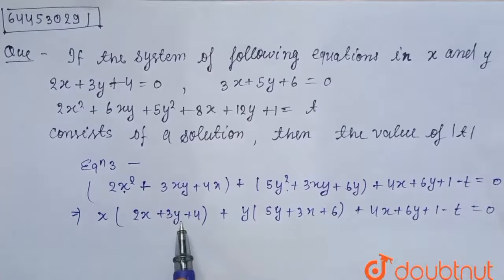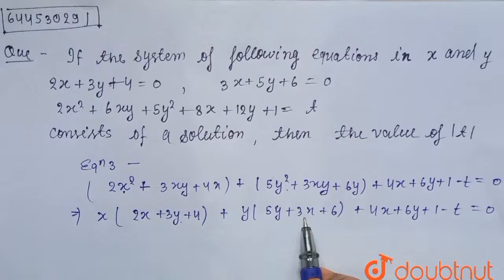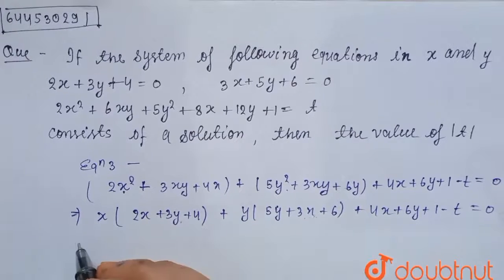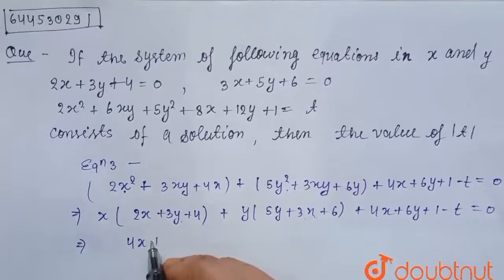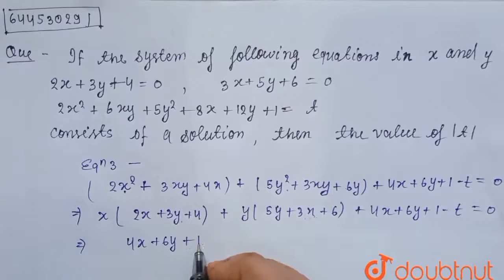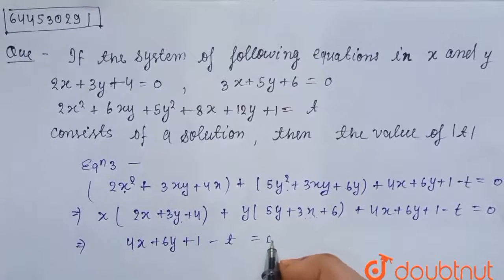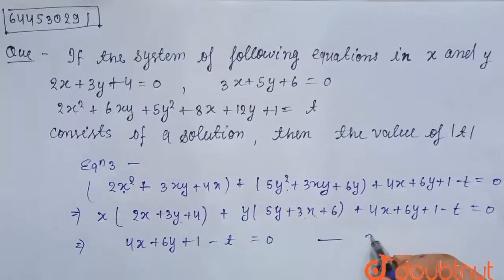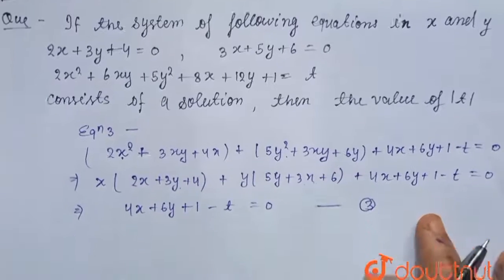Now, see this is our equation 1 and this is equation 2. We have given that the value of this and this is 0. So, we have left only 4x plus 6y plus 1 minus t equals to 0.